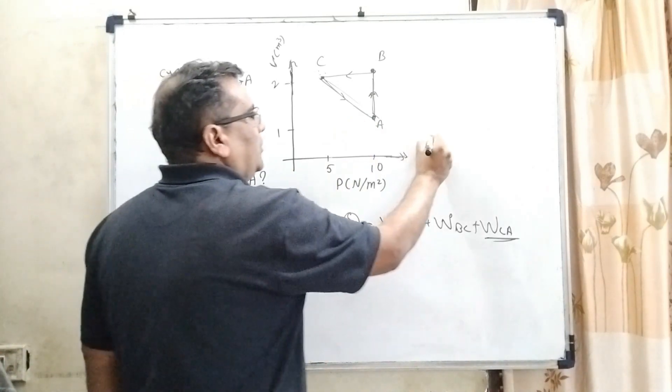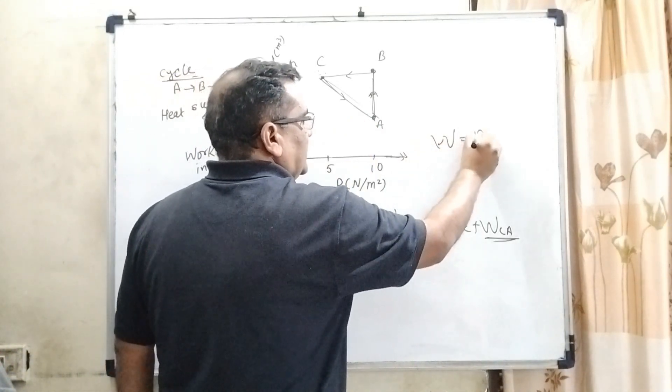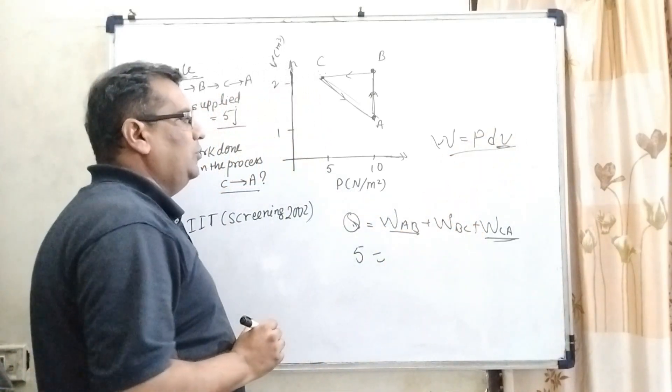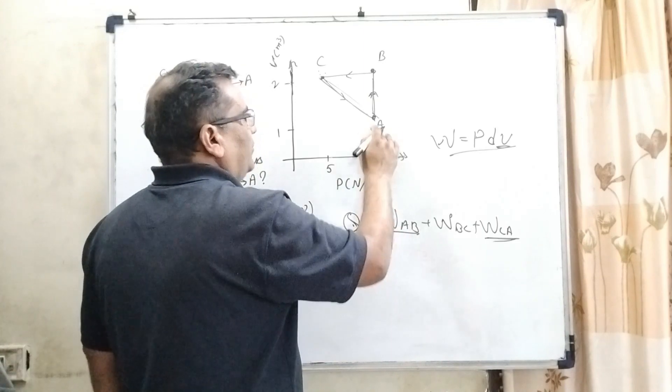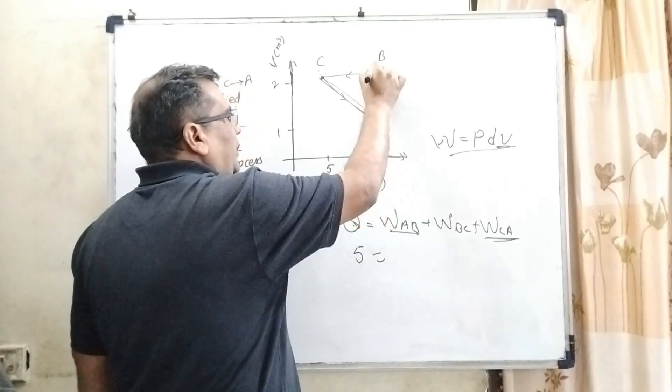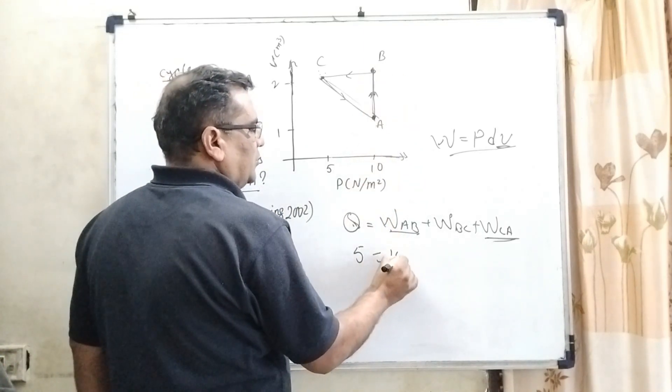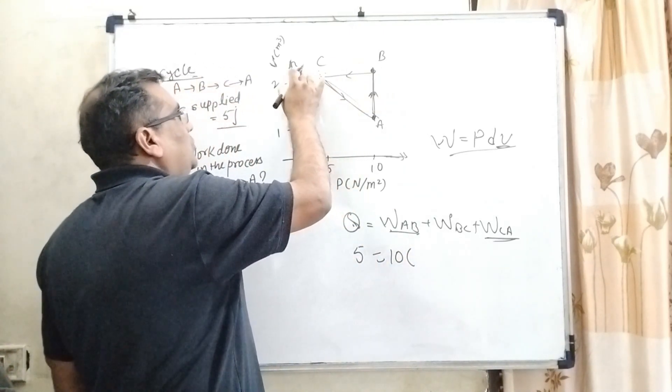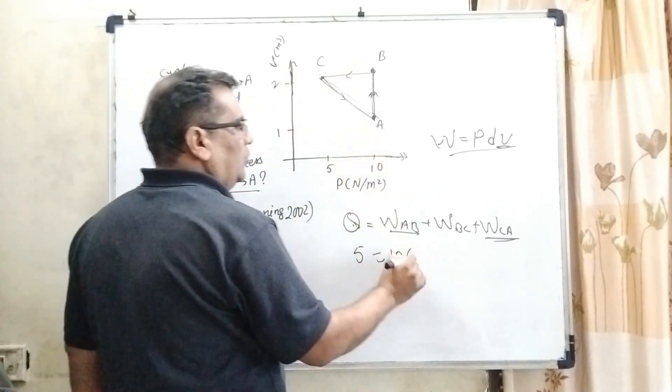And as we know that work done in gases is P dV, where dV is the change in volume. So therefore, for process A to B, the pressure is 10, and the final volume is 2 meter cube and initial is 1 meter cube. So work done is 10 times (2 minus 1).